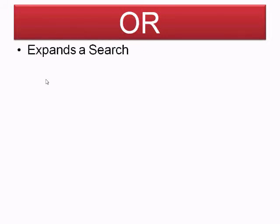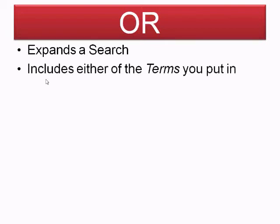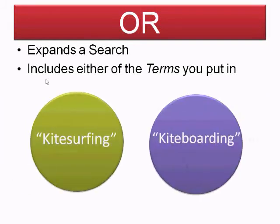Moving on to the third and final option: the OR function. We use the OR function to expand a search that includes results containing either of the words you type in, which broadens the search by retrieving all records containing at least one of the search concepts. It really helps if you want the search to be as relevant as possible. This is especially effective when there are several common spellings or synonyms for a word, such as kite surfing or kiteboarding — both of these terms are interchangeable.